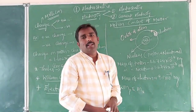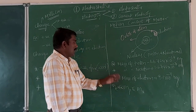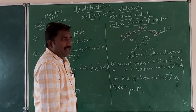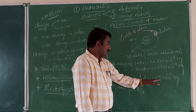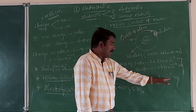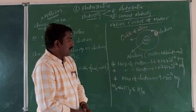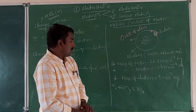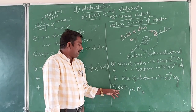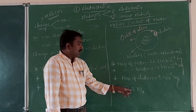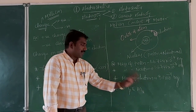The neutron was discovered by Chadwick in 1932. The least massive particle in nature is the electron, with a mass of 9.1 × 10⁻³¹ kg. The mass of the electron is very much less than the mass of the proton or neutron.